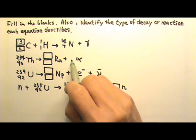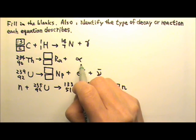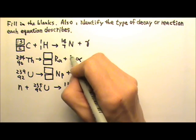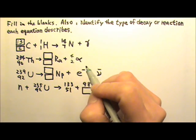And then this one has an alpha particle. What is the alpha particle? An alpha particle is a helium nucleus. It's a helium-4-2 nucleus.